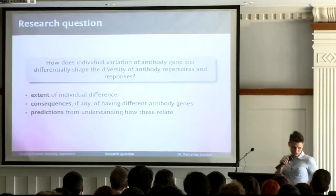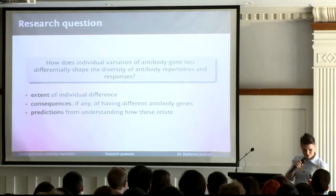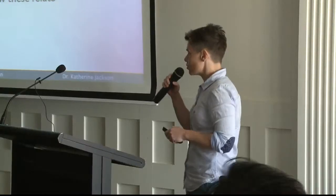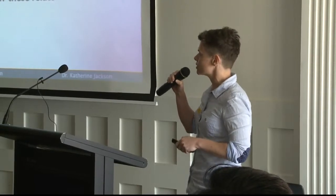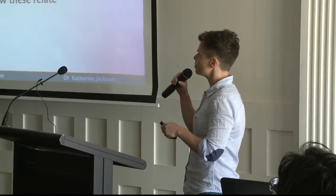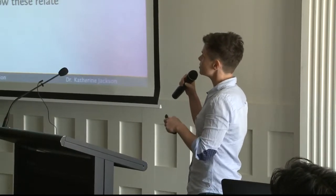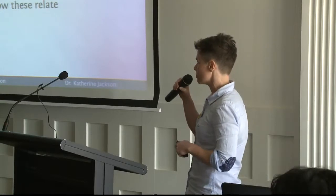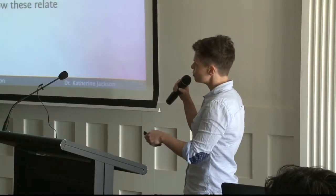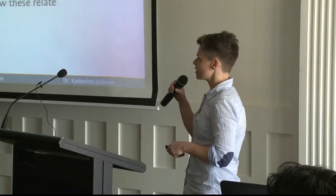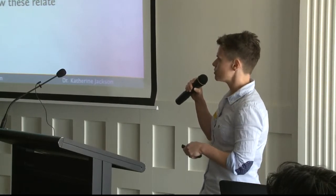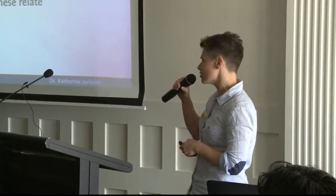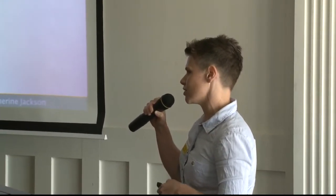Most of the research in our group revolves around the question of how does individual variation in the antibody gene segments that each of us carry flow on into the types of antibodies — effective antibodies — that each individual can make, and does this have any consequence to the type of antibody responses that people can make. We're trying to look at the extent of individual diversity in antibody genes and whether there are any consequences of having different antibody genes, because ultimately what we want to do is make predictions about whether, given an understanding of the types of antibody genes that you carry, we can say anything about your potential to respond to infection or to vaccination.